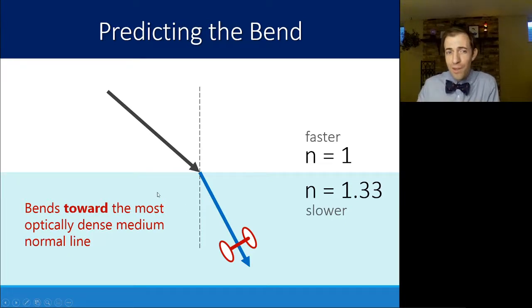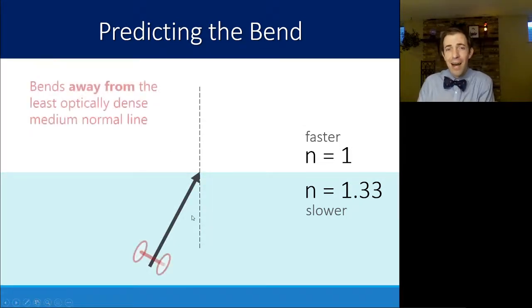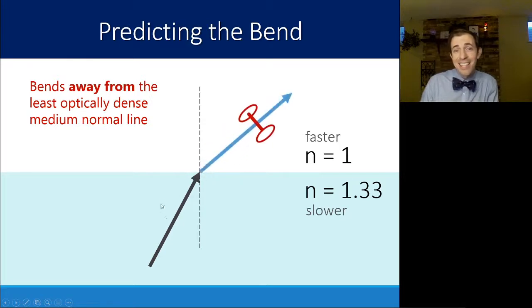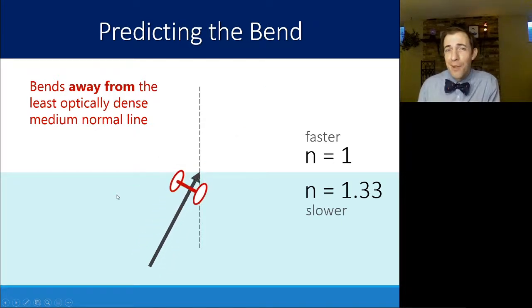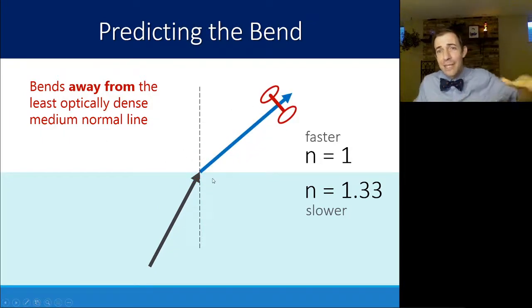It will always bend toward the most optically dense medium's normal line. So in this case, it bends towards that normal line going from air to water. If I flip this around and I'm going from water to air, the same strategy can be used. Imagine that you're pushing that two-wheeled cart out of the mud and onto a driveway. One of the wheels gets to the driveway the faster surface first and then turns away from that location. You will always bend away from the least optically dense medium's normal line. So just like we saw in the opposite, in this case we're bending away because that is the side that reaches first.